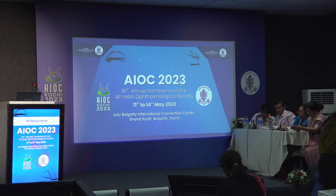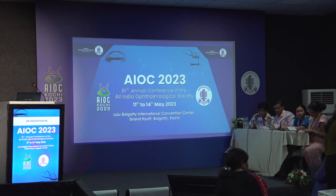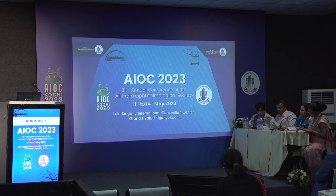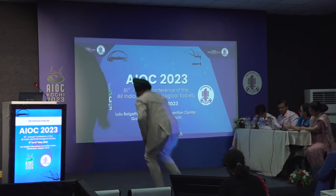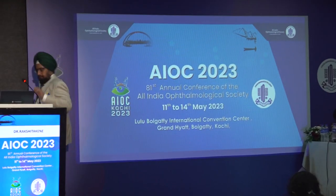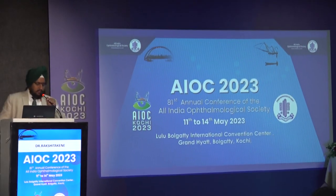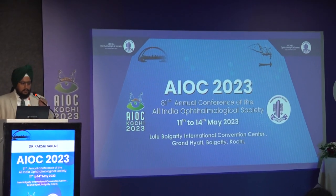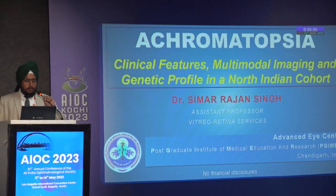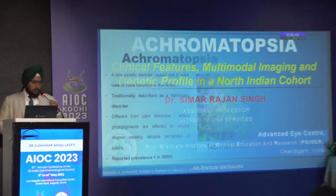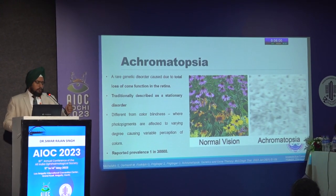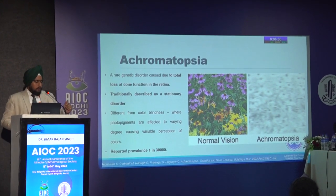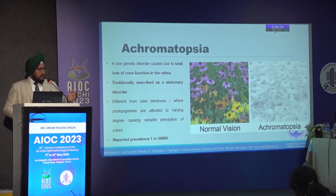Dr. Simar Ranjan Singh is invited to present on multimodal imaging characteristics and genetic profile of achromatopsia in a North Indian cohort. Achromatopsia is a relatively rare genetic disorder caused by total loss of cone function in the retina, traditionally described as a stationary disorder with a reported prevalence of about 1 in 30,000.